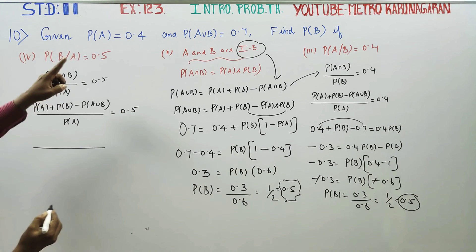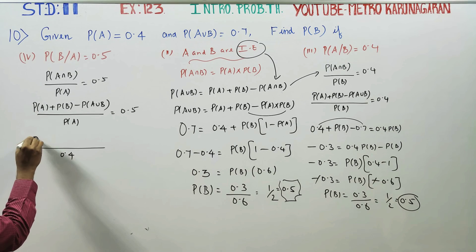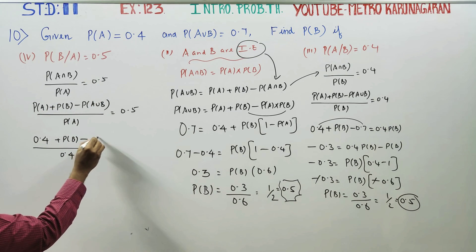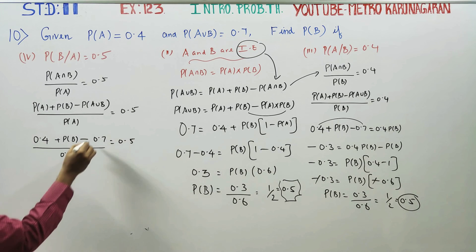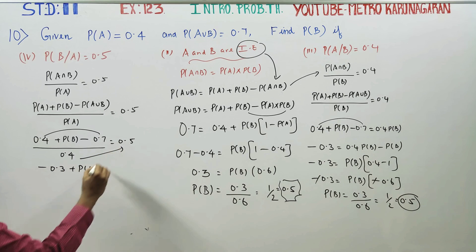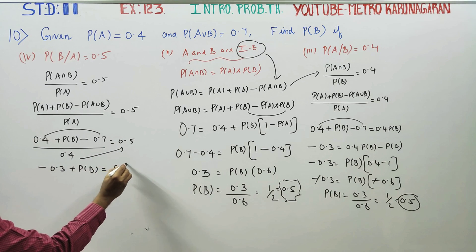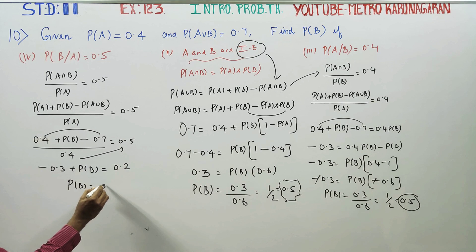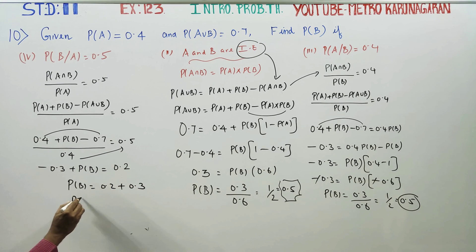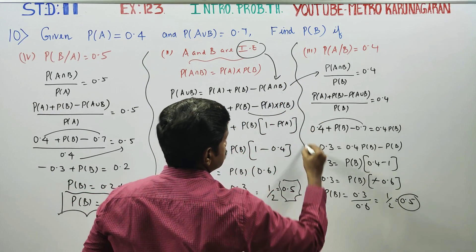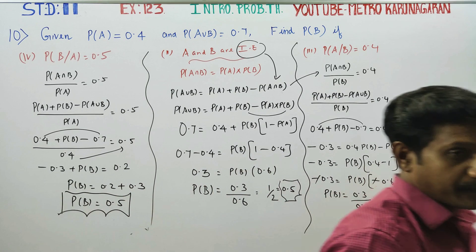Substituting: P(A) = 0.4, P(A∪B) = 0.7. So [0.4 + P(B) − 0.7] / 0.4 = 0.5. Cross-multiplying: 0.4 + P(B) − 0.7 = 0.2. Therefore P(B) = 0.2 + 0.3 = 0.5. Final answer: P(B) = 0.5. This is the fourth subdivision result.